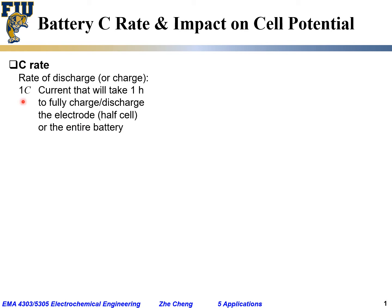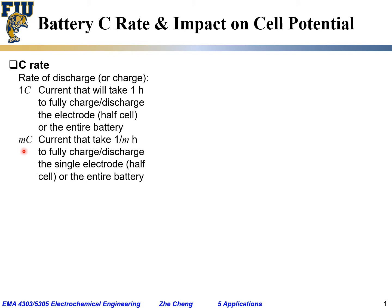So 1C means it will take one hour to fully discharge or charge the electrode. A C-rate of mC means the current level that will take 1/m hours to fully discharge or charge the single electrode, which is the half-cell of the entire battery. For example, 2C means it will take 1/2 hour, which is 30 minutes, to fully discharge or charge the single electrode of the entire battery.